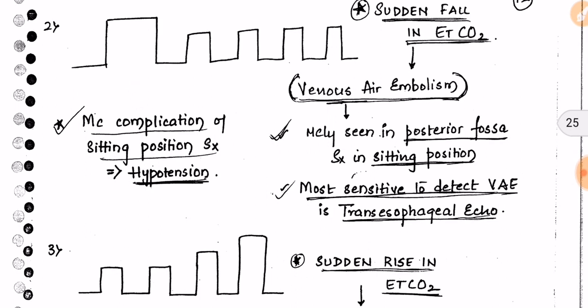A sudden fall in endotracheal CO₂ indicates venous air embolism. This is most commonly seen in posterior fossa surgery performed in the sitting position. The most sensitive test to detect venous air embolism is transesophageal echocardiography. So whenever there is a sudden fall in CO₂, we use transesophageal echo to confirm any embolism.